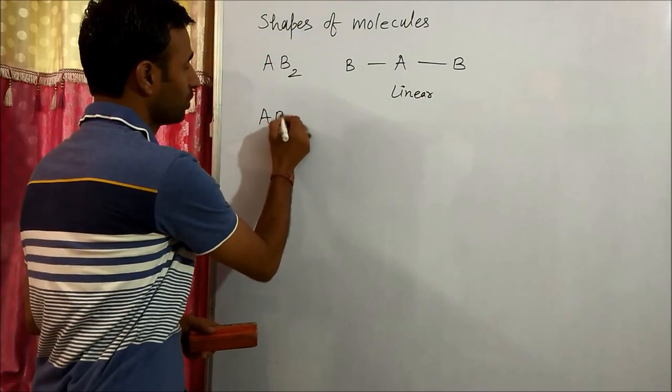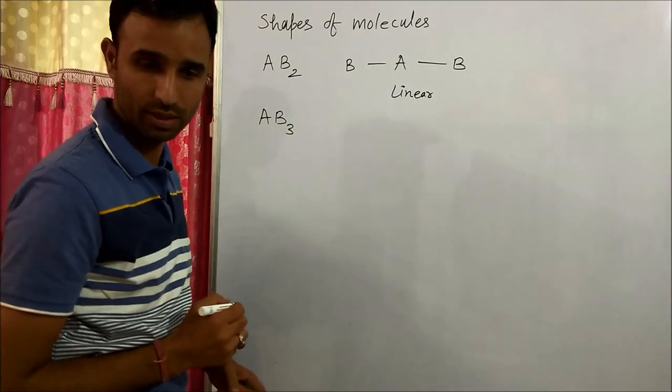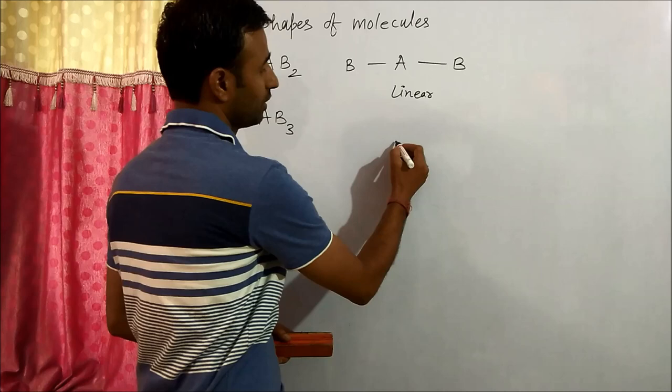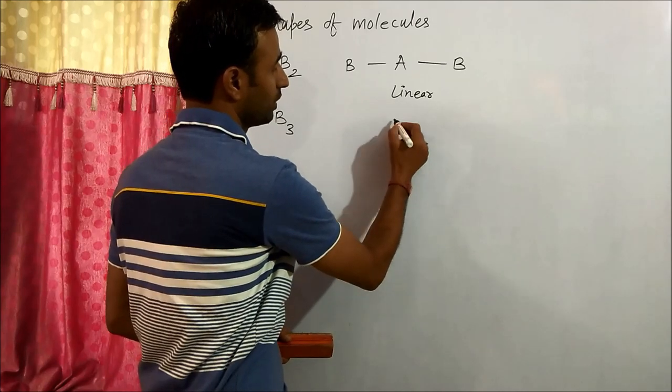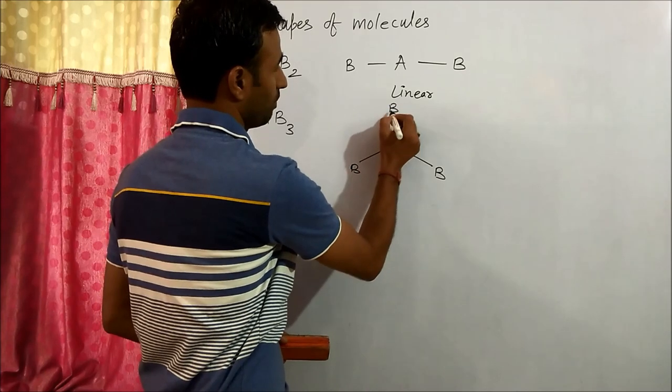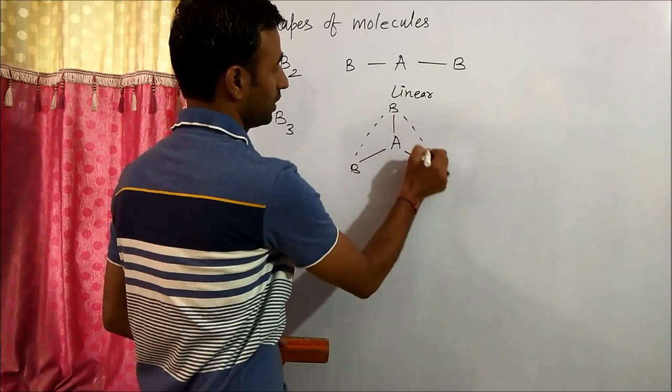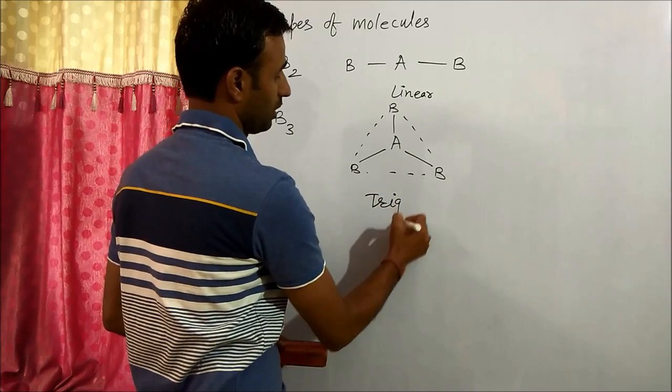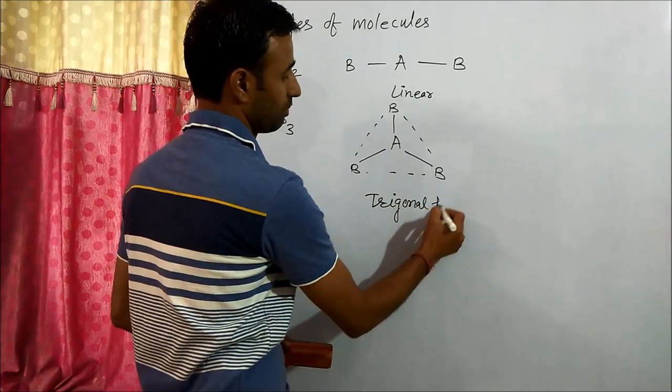Now if we have three bond pairs, when we have three bond pairs then shape of the molecule is trigonal planar, shape of the molecule is trigonal planar.